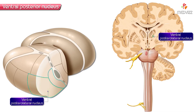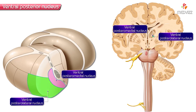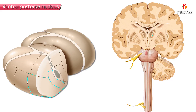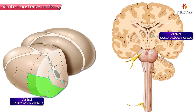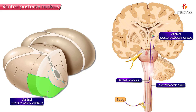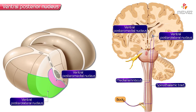The ventral posterior nucleus has two parts: the ventral posterolateral nucleus and the ventral posteromedial nucleus. The afferents received by these nuclei are different. The ventral posterolateral nucleus of the thalamus receives sensory information from the body, while the ventral posteromedial nucleus receives sensory information from the head and face.